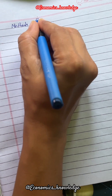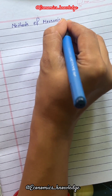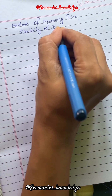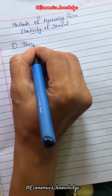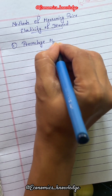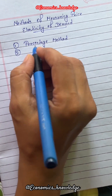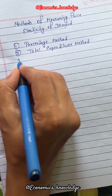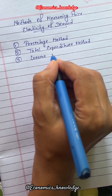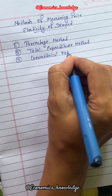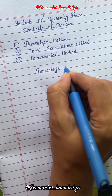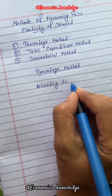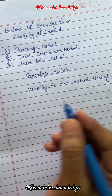Welcome everyone to my YouTube channel Economics Knowledge. Today let's understand the methods of measuring price elasticity of demand. There are three popular methods: number one, percentage method; number two, total expenditure method, which is also known as outlay method; and number three, geometrical method, which is also known as point method.